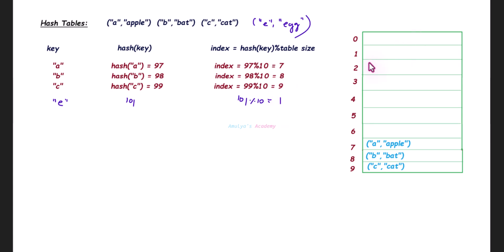So now I need to check index 1 whether it is empty or not. It is empty, so you can add this key-value pair here in index 1. Store this key-value pair in index 1.